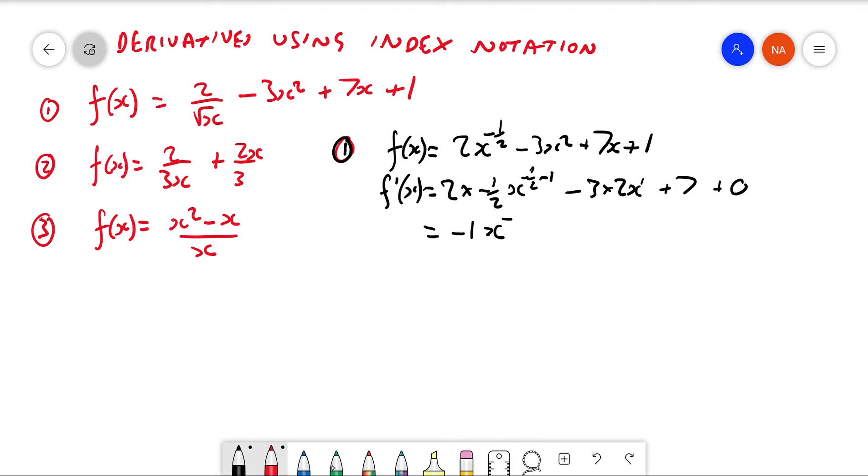This is the same as 2 times negative 1/2 is negative 1. That gives us x to the negative 1 and 1/2, or negative 3/2, and we've got negative 6x and plus 7.